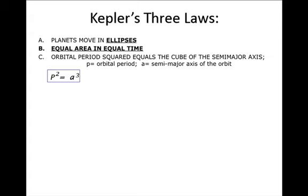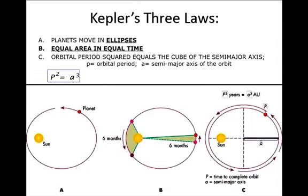Johannes Kepler had three laws of planetary motion. First, planets move in ellipses, not circular orbits. Second, a line joining a planet and the Sun sweeps out equal areas during equal intervals of time. So picture B shows that in six months, the same area is covered on both sides of the ellipse.